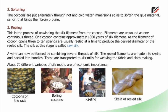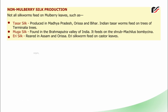Not all silkworms feed on mulberry leaves. Tassar silk is produced in Madhya Pradesh, Orissa and Bihar; Indian Tassar silkworms feed on Terminalia trees. Muga silk is found in the Brahmaputra valley of India; it feeds on the shrub Machilus bombycina. Eri silk is reared in Assam and Orissa; Eri silkworms feed on castor leaves.